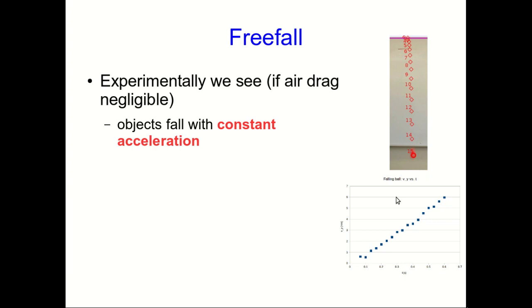One of the reasons uniformly accelerated motion is so important is that it's so common. Throughout this course, we're going to see lots of examples of it. But a particularly important example that you come across often is free fall. And we've already seen an example of free fall because we've looked at this falling ball. And if you look at the v versus t, vy versus t graph, you can see it's roughly a straight line. And that's the hallmark of constant acceleration.